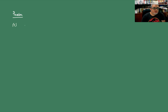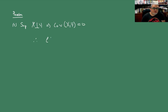Vamos a la prueba. Para el primero, supongamos que X e Y son independientes. Esto significa que la covarianza es cero, y por tanto la correlación es cero.